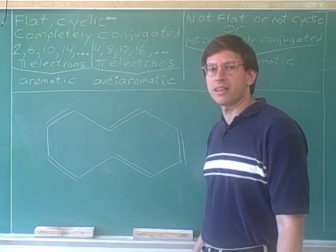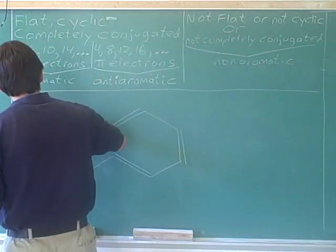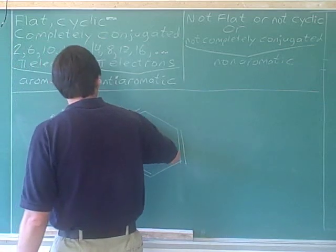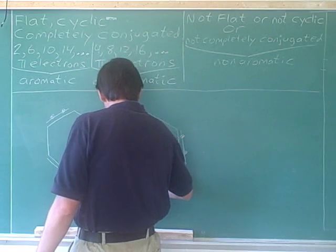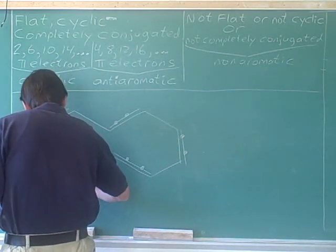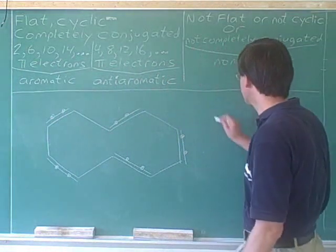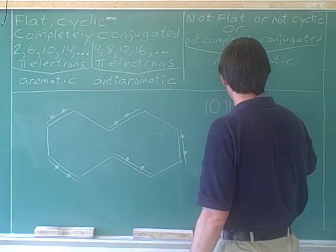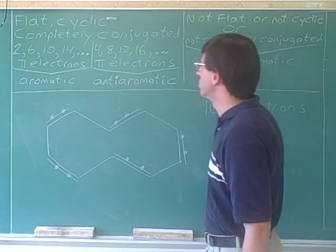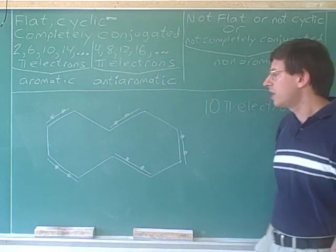We can try counting the pi electrons. There's two pi electrons in each pi bond. One, two, three, four, five, six, seven, eight, nine, ten. Ten pi electrons, which would normally indicate that this was an aromatic compound.